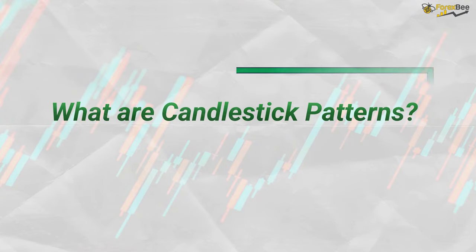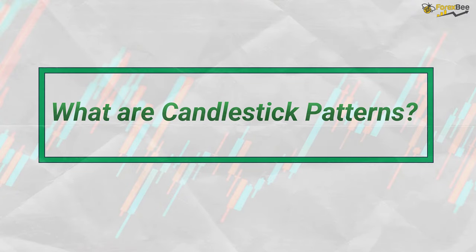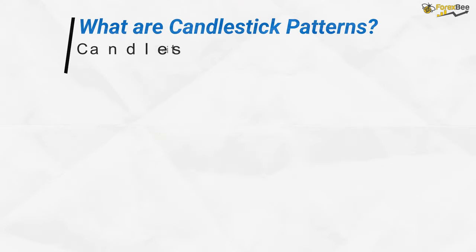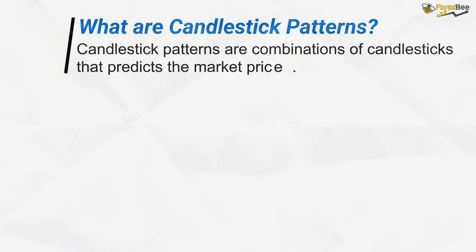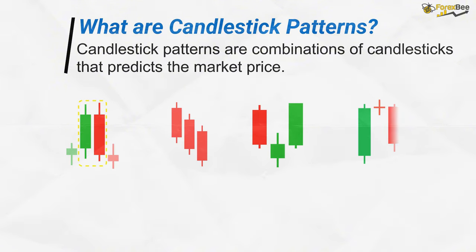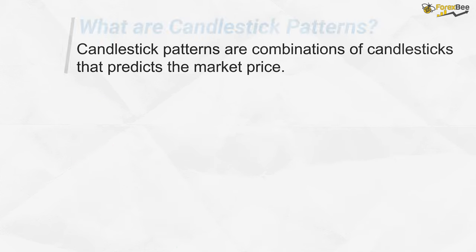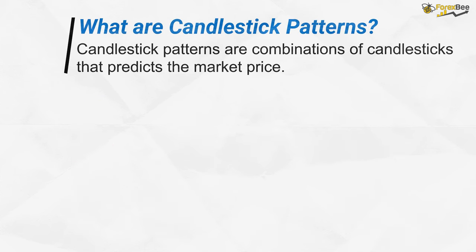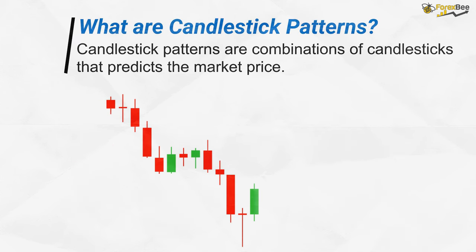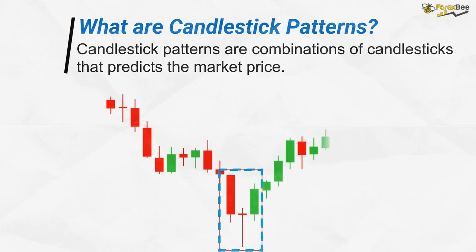Now let's get to the main topic. What really are candlestick patterns? Candlestick patterns are combinations of candlesticks that predict the movement of market prices. For example, here we can see the market moving in the bearish direction. During this downward trend, there is the formation of a doji morning star. After the formation of this pattern, we can see the market trend changing from bearish to bullish.